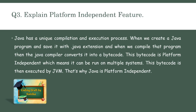The next question is: explain the platform-independent feature. Java has a unique compilation and execution process. When we create a Java program and save it with a .java extension, the Java compiler converts it into bytecode. This bytecode is platform-independent, meaning it can run on multiple systems. It is then executed by the JVM, which is the Java Virtual Machine. That's why Java is platform independent.